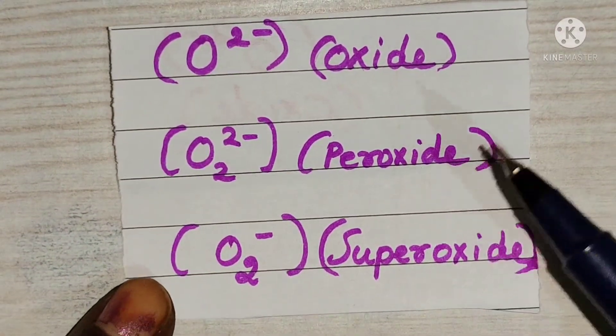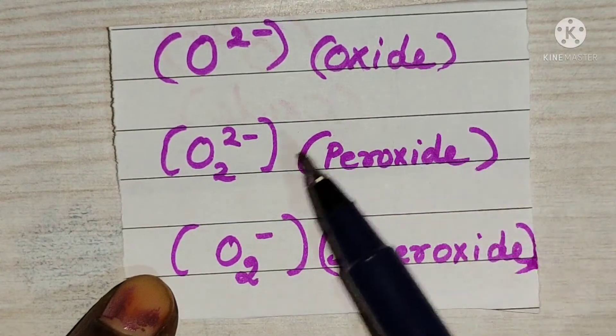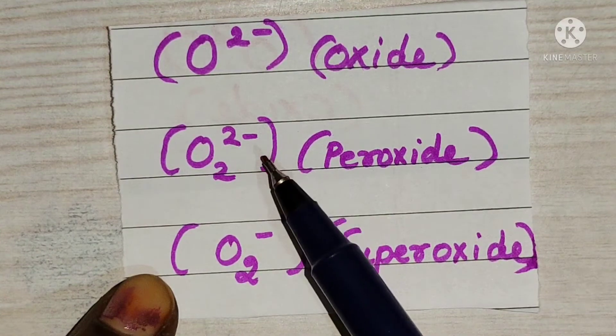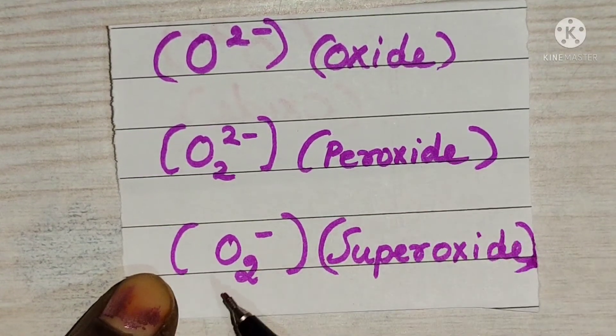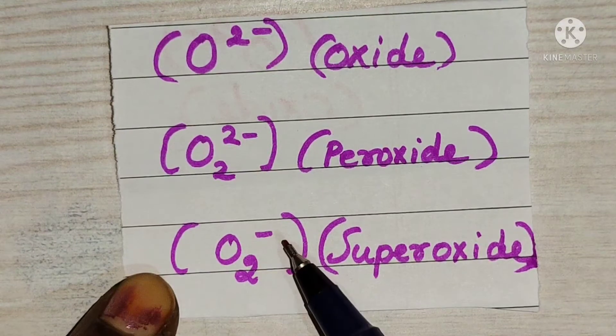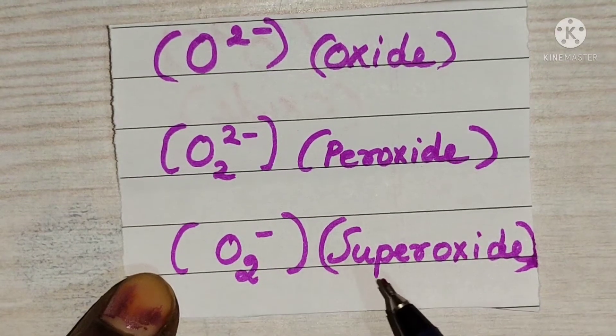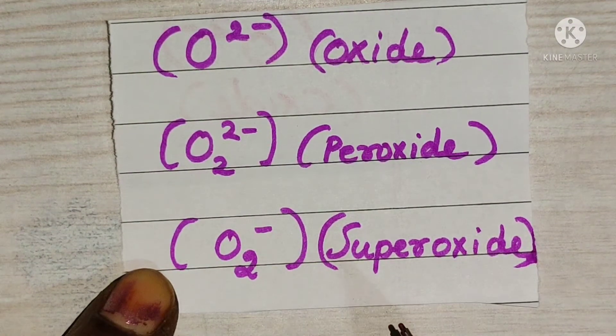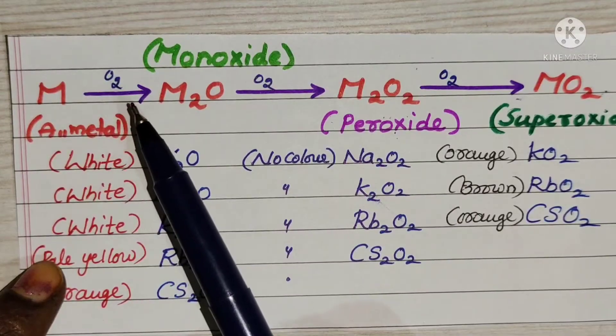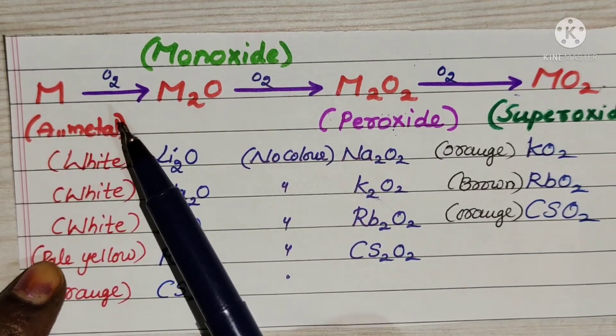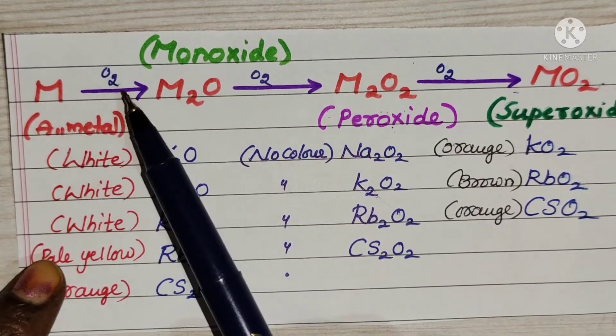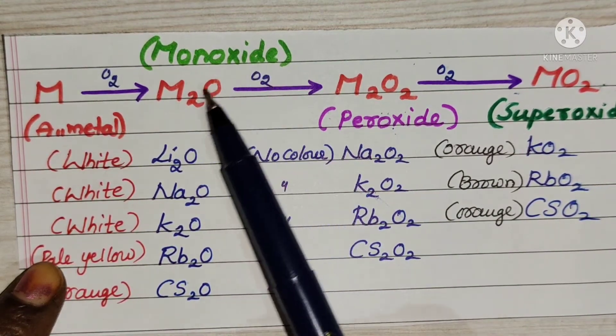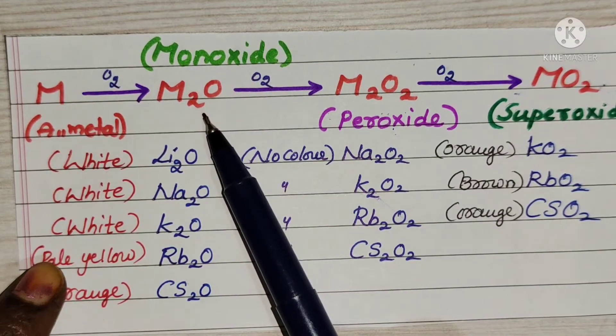Oxygen has two minus charge. When metal reacts with oxygen, it may form metal oxide, that is M2O monoxide. This is the monoxide formula.